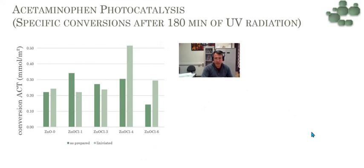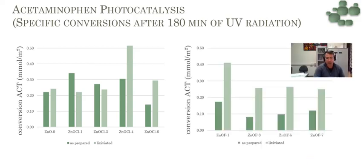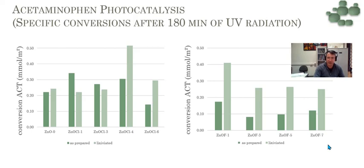This shows us that for chloride, it is important to have chloride in the grain boundary to increase the conductivity, but it is not so good to have chloride on the surface, because it blocks the possible photocatalytic reactions. And for fluorides, the effect is very important as well. You can see that powder with a very low concentration of fluoride shows a very important increase in photocatalytic activity after lixiviation. So fluoride and chloride on the surface are not beneficial, but they are necessary in grain boundaries.